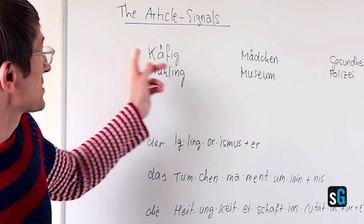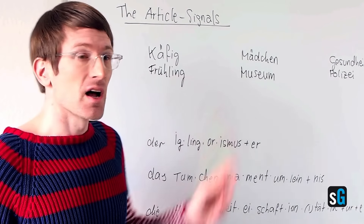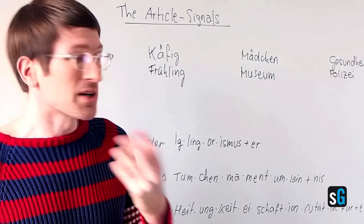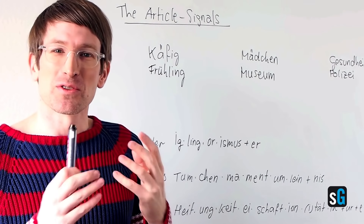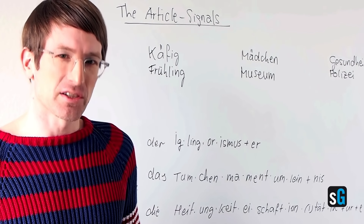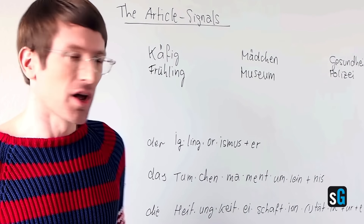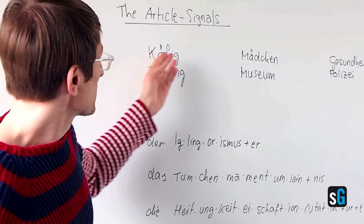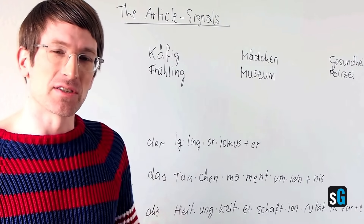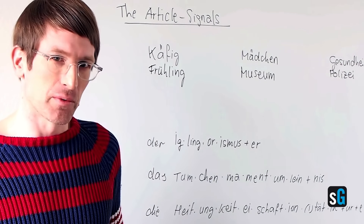Take a look at these six words here. These words are really nice because they show us what article they desire — they want. And you need to know how to recognize these signals they are giving away.